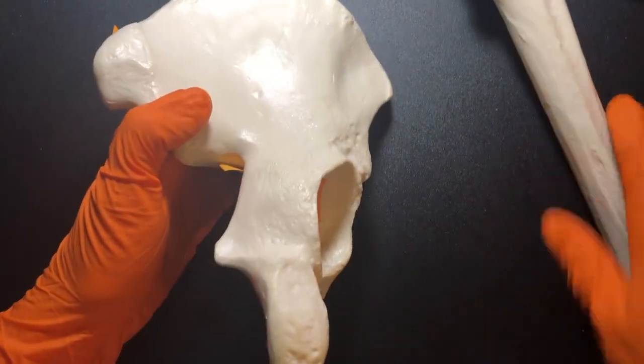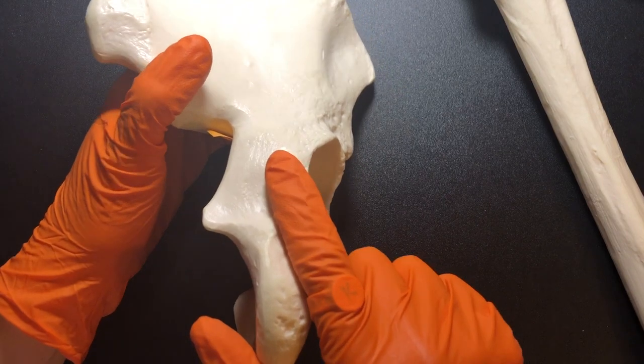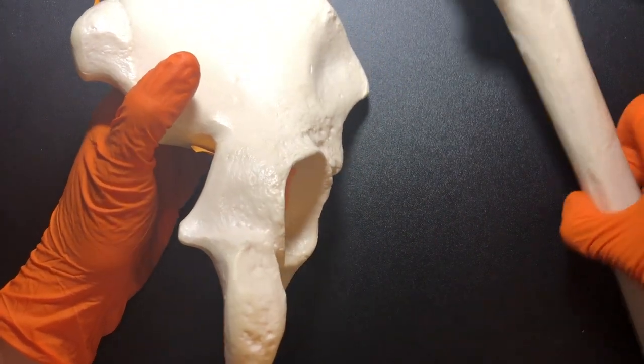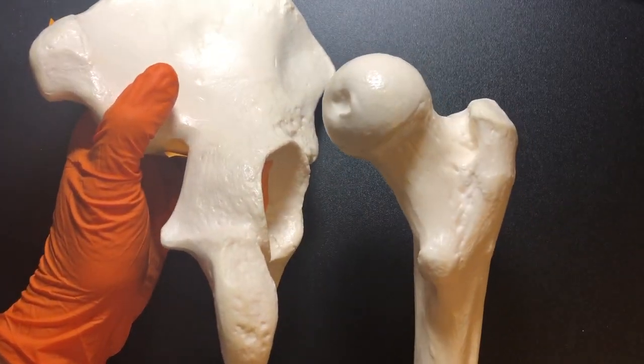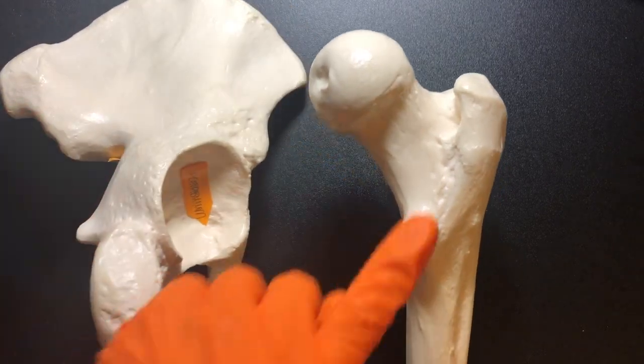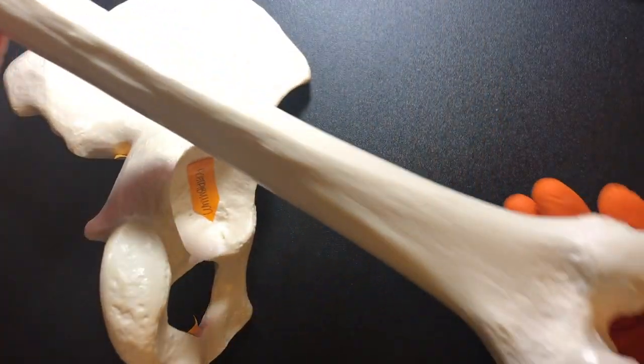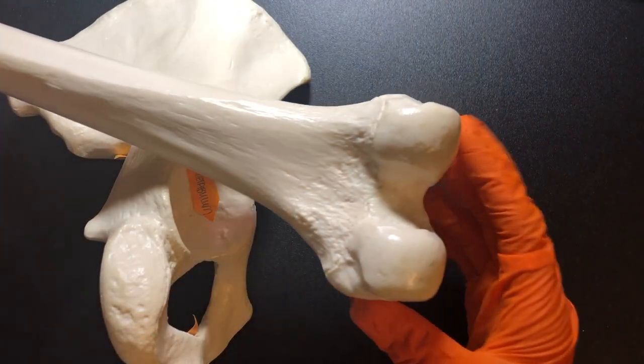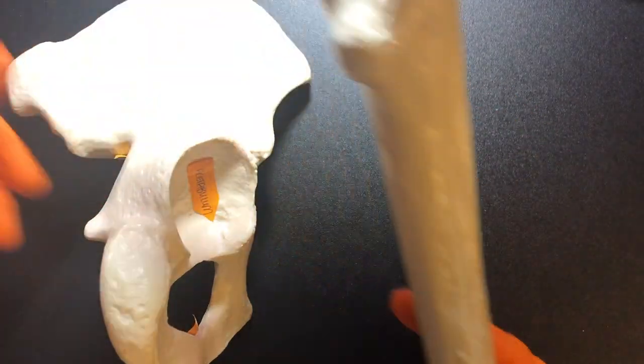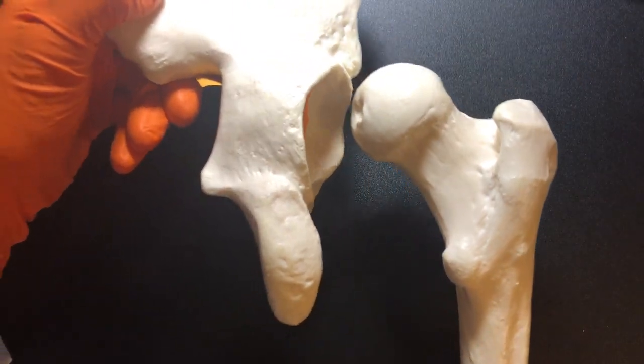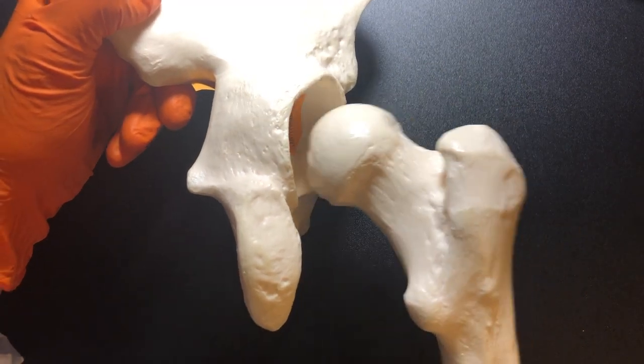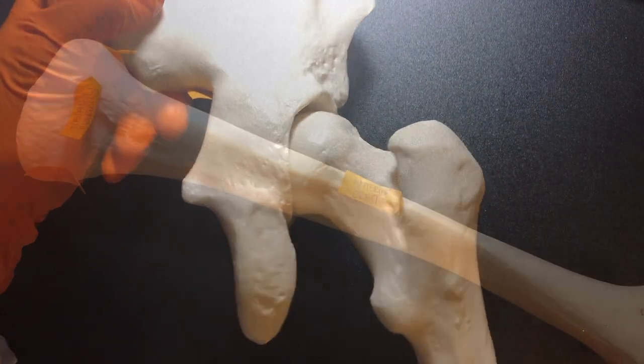This is the right coxal bone. We know that because of our memory trick. And this is the right femur. And we know that because this runs medially. And then we remember looking at the entire bone, those condyles are on the posterior side. So we're looking at the back side of these two bones, but this ball and socket goes in just like that.